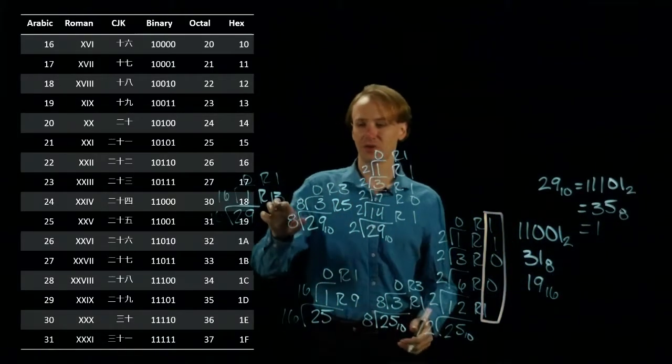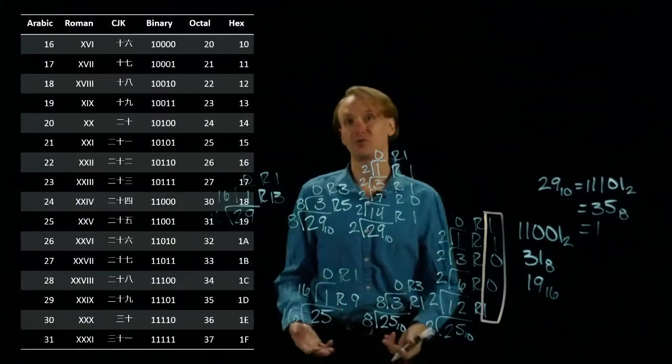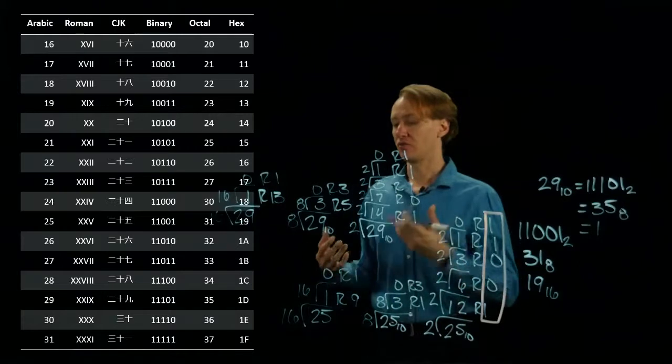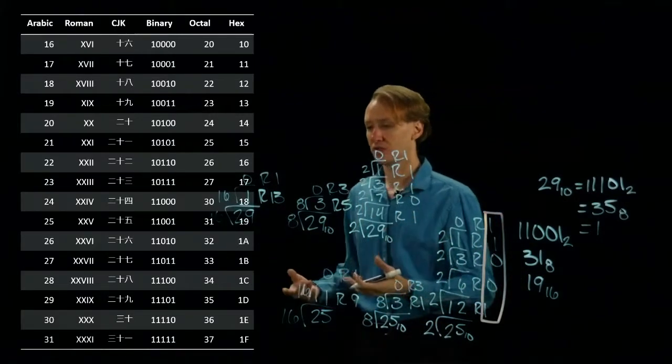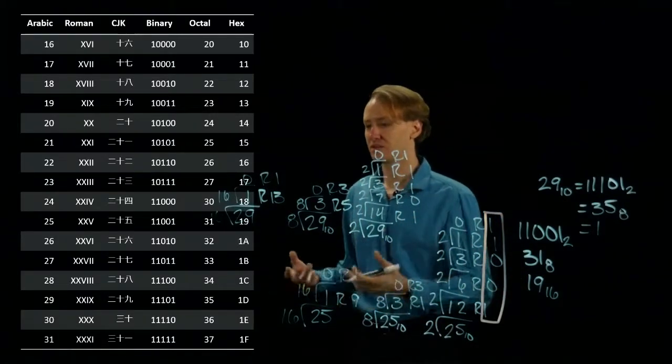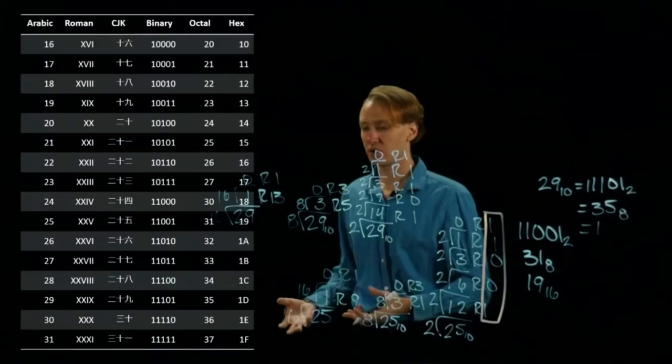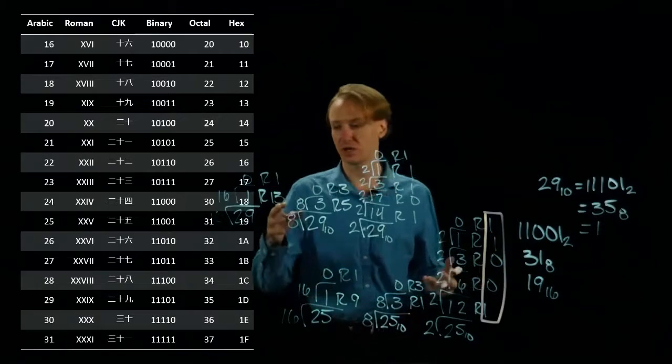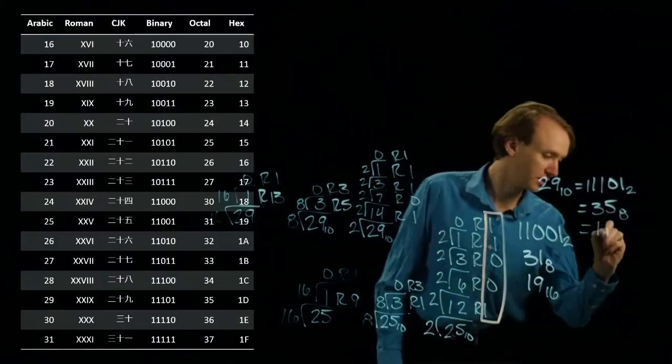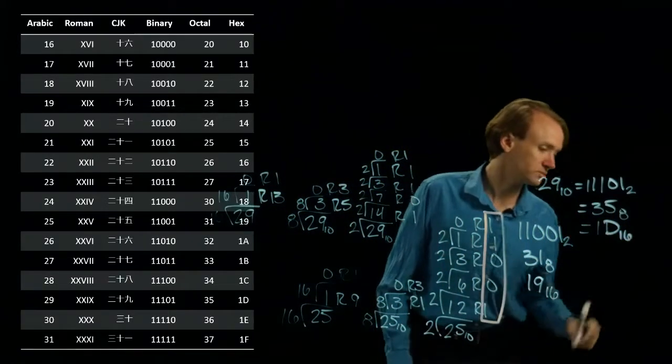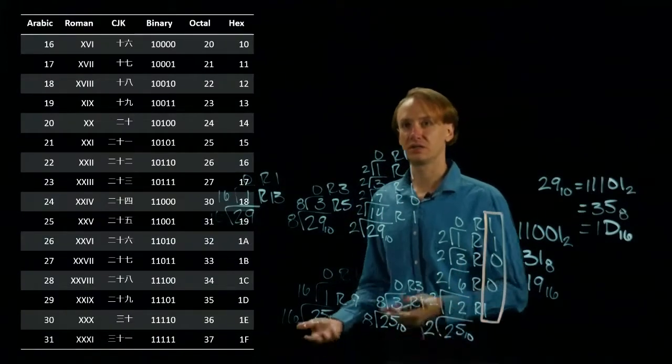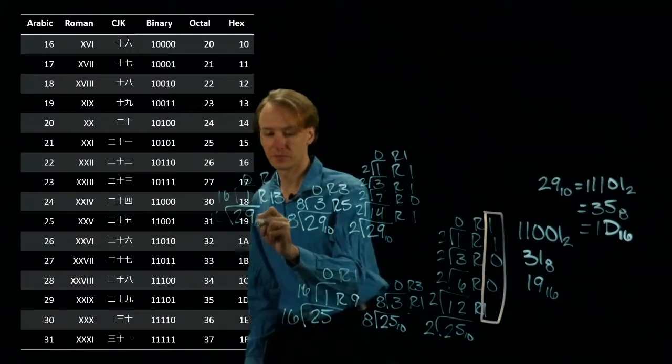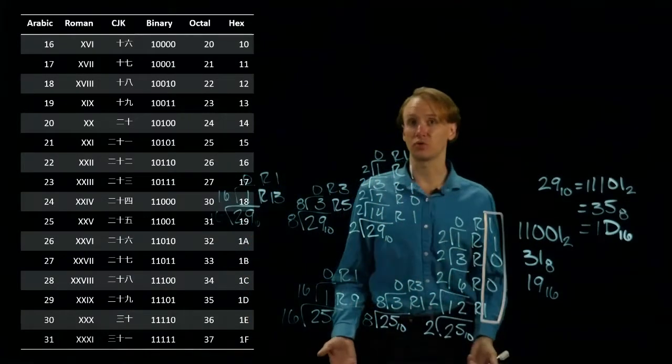But I really want 13 to be in hexadecimal, not decimal. So if I look this up in my chart, I'd see A is 10, B is 11, C is 12, D is 13. So 13 is what I need, so I put in a D. And if I look over under 1D, yes, I get 29 as my original decimal number. So those match up on my number line as well.